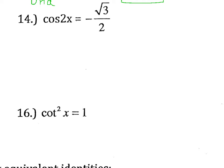Number 14 gives us our first multi-angle formula. We have cosine of 2x. Whenever you see a coefficient in front of the x, we have to solve it in a different way. First we need to find where cosine equals negative root 3 over 2, which occurs in the second or third quadrant where cosine is negative. The adjacent side is root 3 and the hypotenuse is 1, so we must be dealing with a 30 degree angle. These two angles are 5 pi over 6 and 7 pi over 6.